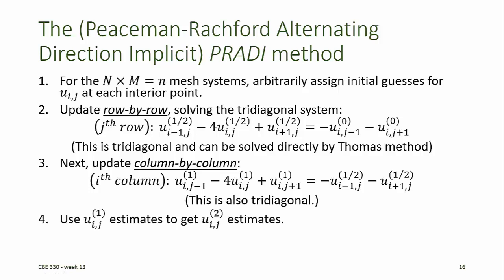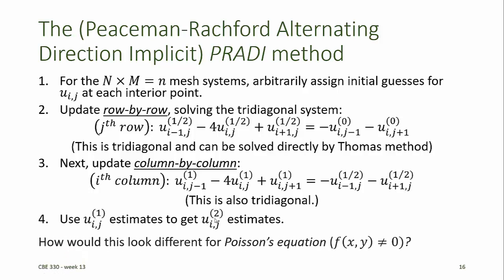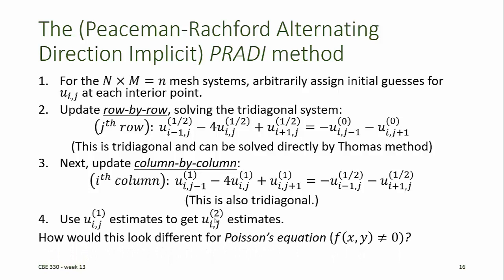Then we iterate, beginning with the guesses for the values of each of our unknown elements equal to the values obtained after the first iteration. We continue iterating until the unknown values of u stop changing. How would this look different if instead of solving Laplace's equation we were solving Poisson's equation? That is, the right-hand side of our initial defining equation, instead of being equal to zero, is equal to some function of x and y. The difference would be that on the right-hand sides of each of these equations we would have some function of x and y.